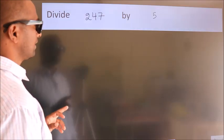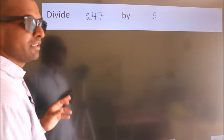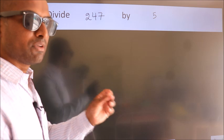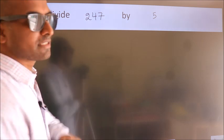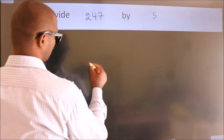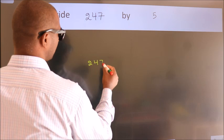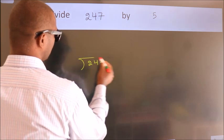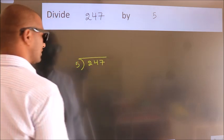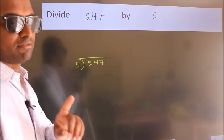Divide 247 by 5. To do this division, we should frame it in this way. 247 here, 5 here. This is your step 1.